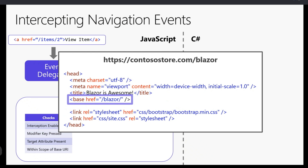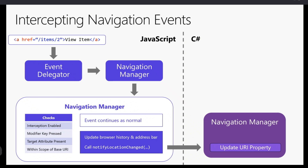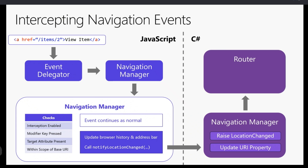The first thing the C# NavigationManager does is update the URI property to wherever we're navigating — in this case, item/2. Then it raises a LocationChanged event, which the router is listening for. The router checks the URI against its routing table, finds a match, and loads the component that handles that route. That's how we go from clicking a link to the router loading the correct page component.